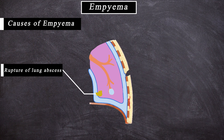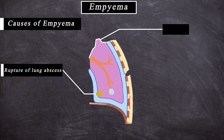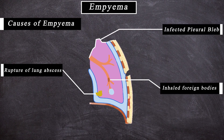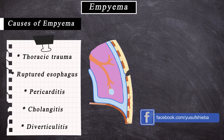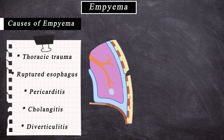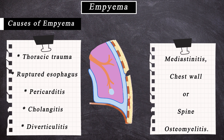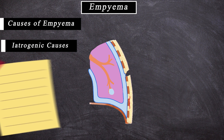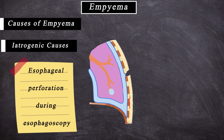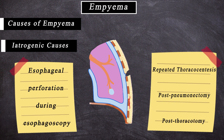Empyema may also occur after rupture of a lung abscess, infected pleural bleb, or bronchopleural fistula. It may result from thoracic trauma, ruptured oesophagus, pericarditis, and abdominal processes such as cholangitis and diverticulitis with translocation of bacteria across the diaphragm, mediastinitis, chest wall or spine osteomyelitis. Iatrogenic causes include oesophageal perforation during oesophagoscopy, repeated thoracocentesis, post-pneumonectomy, and post-thoracotomy.